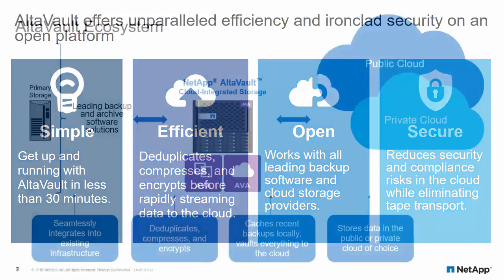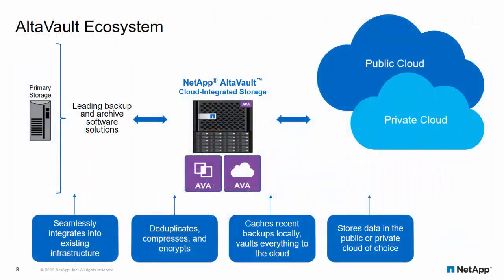The AltaFault ecosystem is quite broad and supports over 90% of the enterprise backup storage market, as well as all the leading public and private cloud providers. Data from the primary storage is processed through one of the backup applications, or is sent via SMB, NFS, or OST to AltaFault. AltaFault deduplicates, compresses, and encrypts this data all inline using variable length deduplication, LZ compression, and AES 256-bit encryption before it lands on the AltaFault cache.